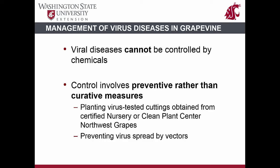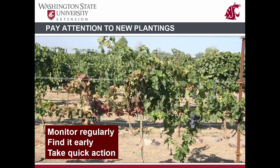Two widely adopted methods are: first, planting new blocks with certified virus-tested cuttings from certified nurseries or from Clean Plant Centers such as the Clean Plant Center Northwest in Prosser, Washington, or the Foundation Plant Services in Davis, California; and second, controlling vectors to minimize spread between and within vineyards. Although planting certified vines provides a sense of comfort, it is important to be vigilant against new virus infections from external sources. Monitor new plantings regularly during the season and identify any suspicious vines showing symptoms.